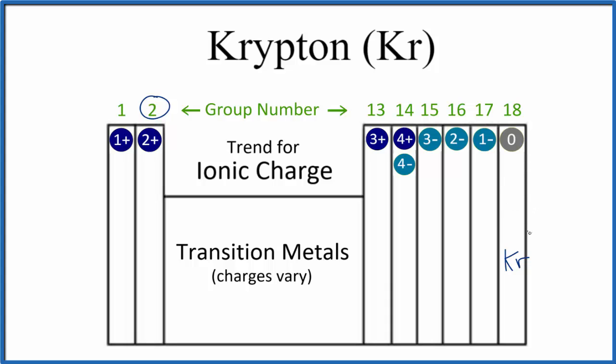So krypton, because it doesn't form ions, its ionic charge is 0, and all of the elements here in group 18 will have an ionic charge of 0.